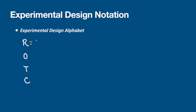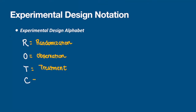The R stands for randomization, the O stands for observation, the T stands for treatment, and the C stands for constant. These are the letters we're going to use and see throughout all of the videos that talk about experimental research design.